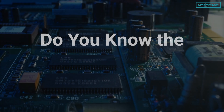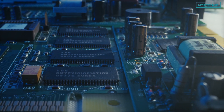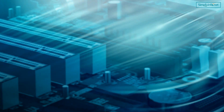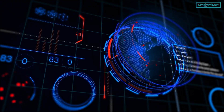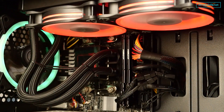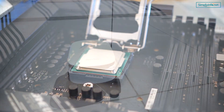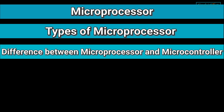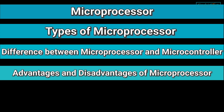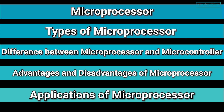Do you know the microprocessor is one of the most important inventions in recent decades? It has allowed our society to advance technologically at an exponential rate and to create more efficient and faster devices that can be used for a variety of purposes. Let us try to understand about microprocessor, types of microprocessor, difference between microprocessor and microcontroller, advantages and disadvantages of microprocessor, and applications of microprocessor through this video.